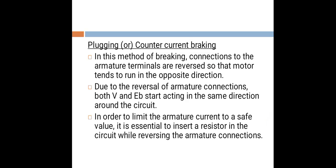Plugging or counter current braking. In this method of braking, connections to the armature terminals are reversed so that the motor tends to run in the opposite direction. Due to the reversal of armature connections, both V and EB start acting in the same direction along the circuit. In order to limit the armature current to a safe value, it is essential to insert a resistor in the circuit while reversing the armature's connections.